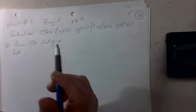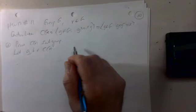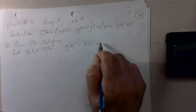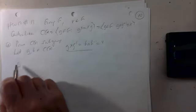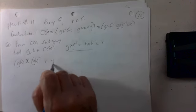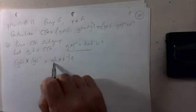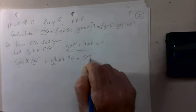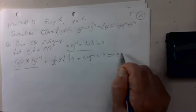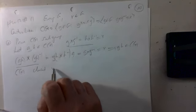Suppose g and h are in C(x), so gxg⁻¹ = x and hxh⁻¹ = x. Then (gh)x(gh)⁻¹ = g(hxh⁻¹)g⁻¹ = gxg⁻¹ = x, so gh is in C(x). The centralizer is closed under multiplication. Also, exe⁻¹ = x, so the identity is in C(x).